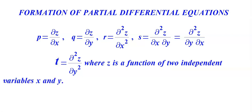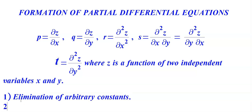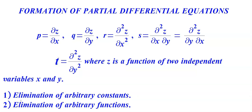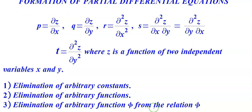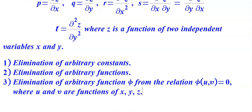In this section, we are going to deal with three types of problems: first, elimination of arbitrary constants; second, elimination of arbitrary function; and third, elimination of arbitrary function phi from phi(u,v) = 0, where u and v are functions of x, y, z.